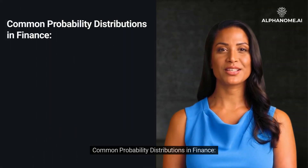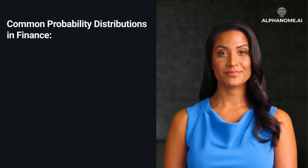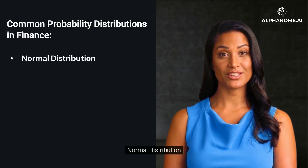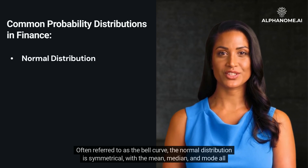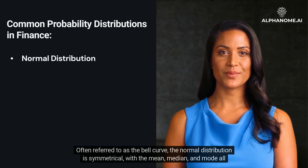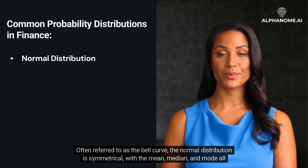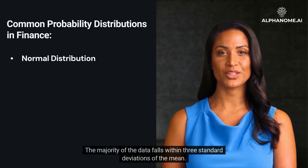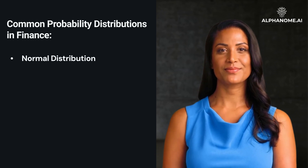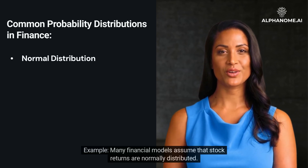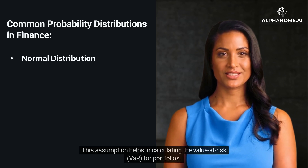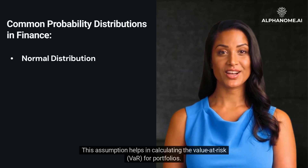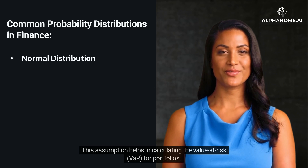Common Probability Distributions in Finance. Normal Distribution: often referred to as the bell curve, the normal distribution is symmetrical, with the mean, median, and mode all being equal. The majority of the data falls within three standard deviations of the mean. Many financial models assume that stock returns are normally distributed, and this assumption helps in calculating the Value at Risk (VAR) for portfolios.